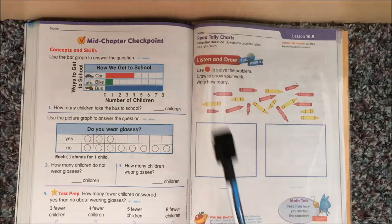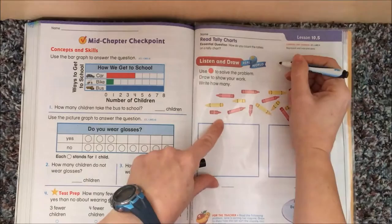Now, tallies, you'll remember, are like this: 1, 2, 3, 4, 5, 6, 7, 8, 9, 10.